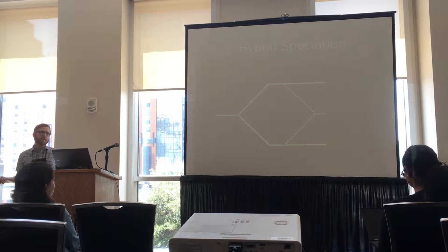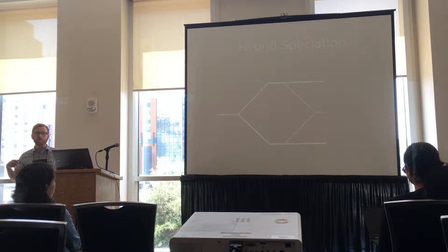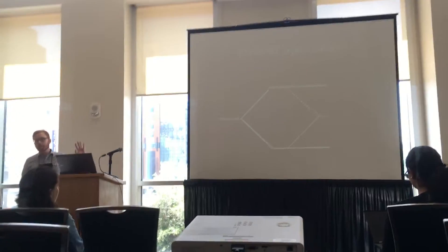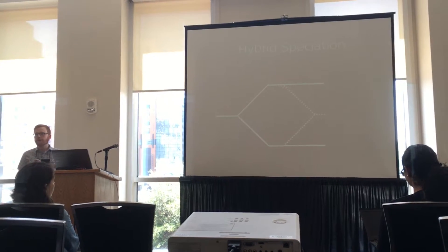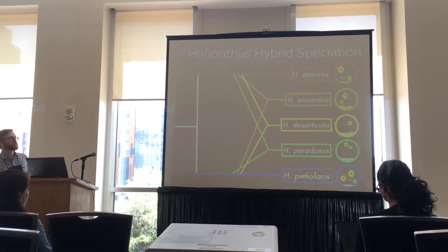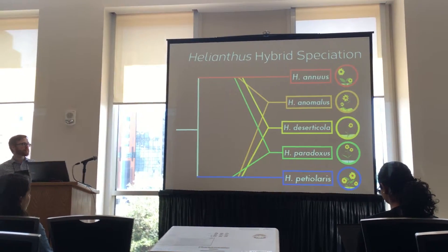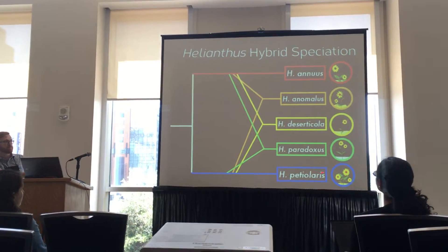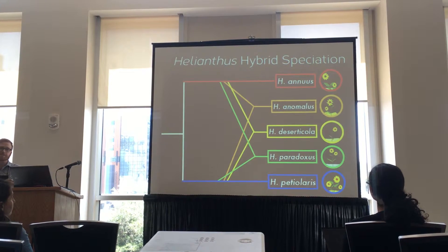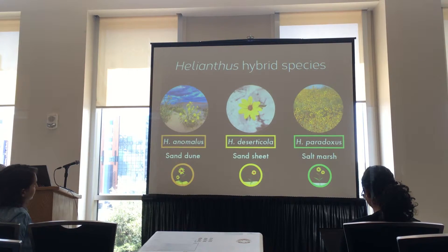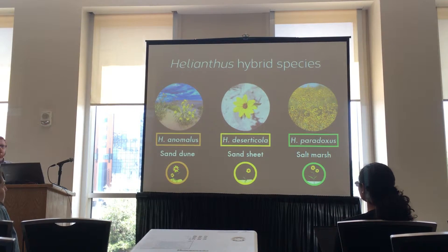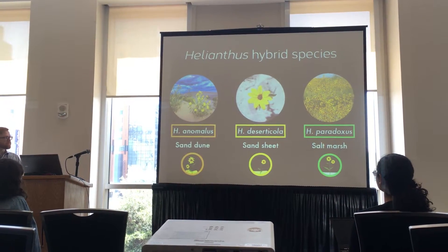Hybrid speciation can occur in two ways: in allotetraploids, where the genomes are not reduced and there's a genome doubling, and also in homoploid hybrid speciations, where there's not a genome doubling. The best examples of homoploid hybrid speciation are in sunflowers, where the same two sunflower species — Helianthus annuus and Helianthus petiolaris — have produced three different homoploid hybrids: Helianthus anomalus, Helianthus desicola, and Helianthus paradoxus. Each of these hybrids lives in comparatively extreme habitats: anomalus in sand dunes, desicola in sand flats, and paradoxus in salt marshes, away from the parental species.